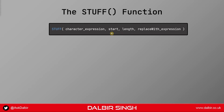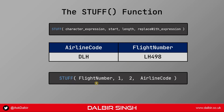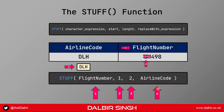And finally is the replace-with expression — this is the text that you want to insert at this position. Looking at the last row in the table: for the character expression we supplied the flight number; for the start parameter we specified one because we want to start at the beginning of the string; for the length parameter we specified two, which got rid of the first two letters; and for the fourth parameter, the replace-with expression, we asked to insert the airline code — and that's exactly what we got.